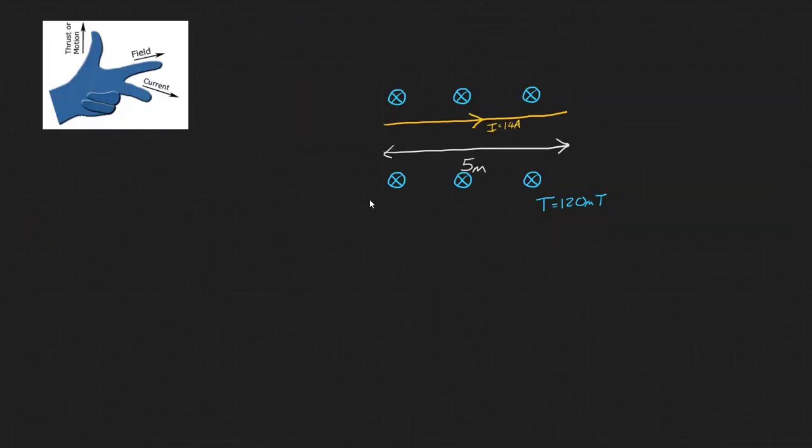Let's finish with a quick example. Here we have a conductor that is 5 metres long, placed in a uniform magnetic field of 120 milliteslas that is acting into your screen, and a current of 14 amps is flowing through our conductor from left to right across our screen.